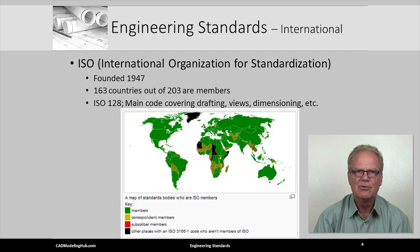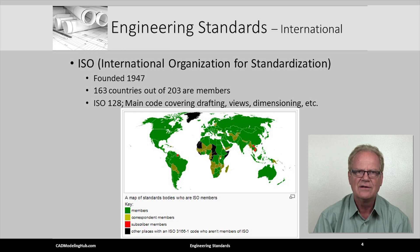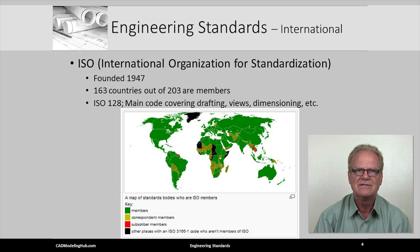In 1947, at the end of World War II, many countries came together and formed the International Organization for Standards, or ISO. Today, some 163 countries are members. Other countries are either correspondent members or subscribers, which means they still use the rules and guidelines published by the ISO organization.